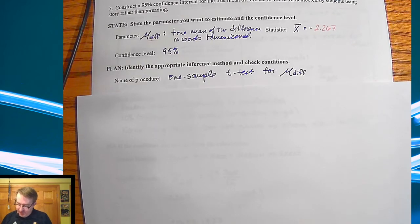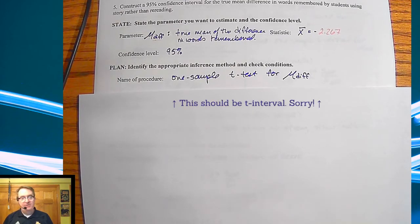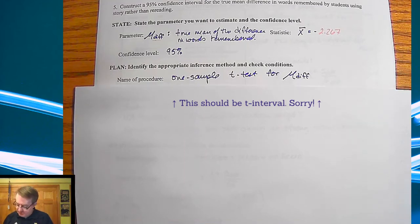For the plan, we're going to call this the one sample t-test for the difference in means. So again, we're back to the one sample. Why is it one sample? Because even though we're doing two different things, we're finding the difference between each, for each person. So we're getting one sample from each person because they're giving us the difference between the two.